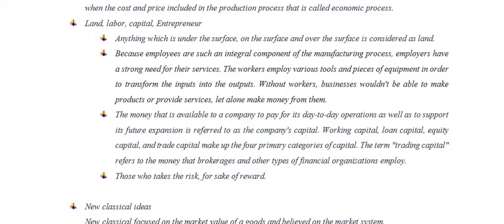What is land? Anything which is under the surface, on the surface, and over the surface is considered as land. Under the surface means minerals; on the surface includes vegetables and crops; and over the surface is considered as climate, weather, and sunshine.